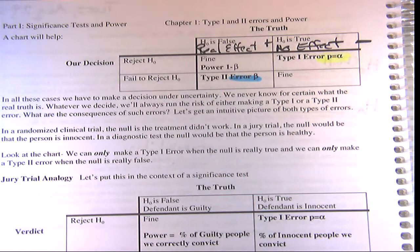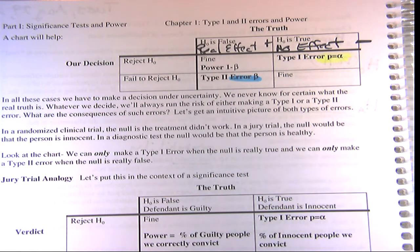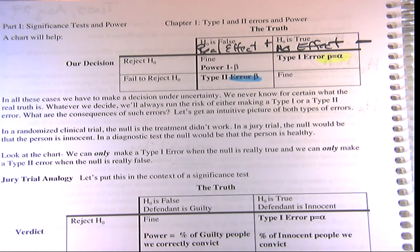Most cases — like the example of the online class versus the in-person class, comparing two teaching methods — it's not just that it worked or it didn't work. There are all different levels: a drug or treatment can work a little bit, maybe just a percent or two difference in averages, or it could have a dramatic effect, like increasing A's from 20% to 60% of the time.